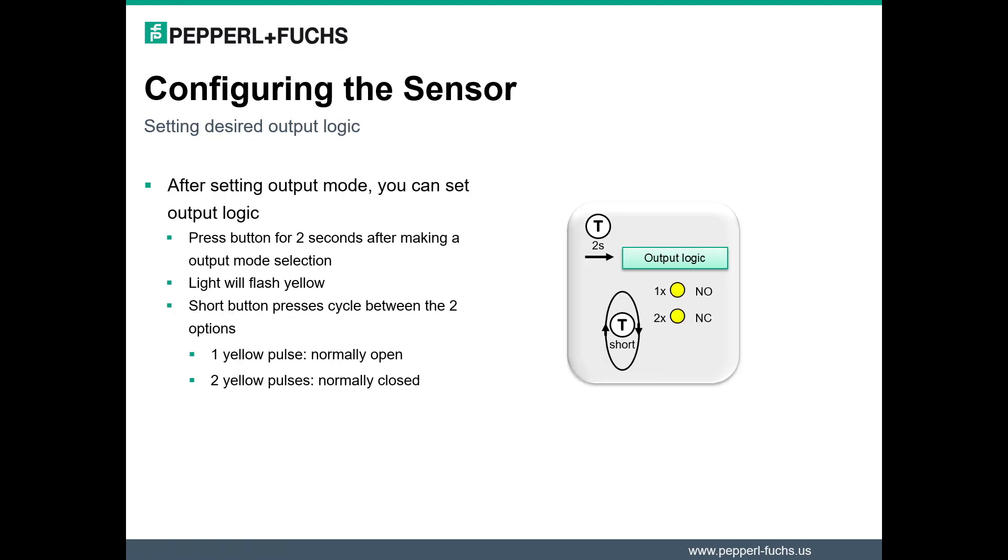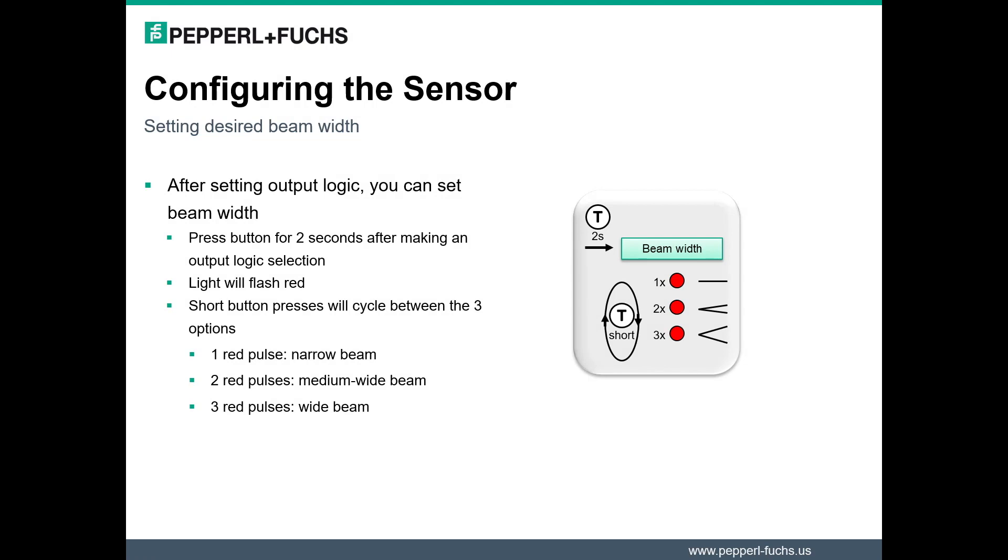After you have chosen your output mode, we can now set the output logic. To move on to the output logic, hold the push button for 2 seconds until you see the light begin to flash yellow. You can then cycle between the two options using short button presses. One yellow pulse indicates normally open, and two indicate normally closed.